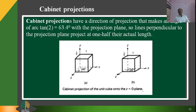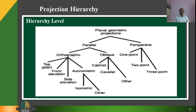These are all about projections. In these slides, a hierarchy chart shows how geometric projections are classified. At the first level, projections divide into parallel and perspective. Parallel is further classified as orthographic and oblique. Orthographic divides into top, front, side, and axonometric — which is further classified as isometric and other. The oblique part includes cabinet, cavalier, and other. Perspective projections have one-point, two-point, and three-point. The entire classification of projection types has been discussed.